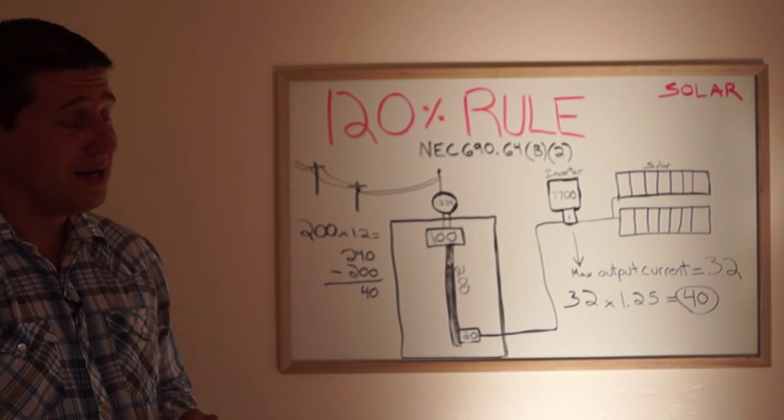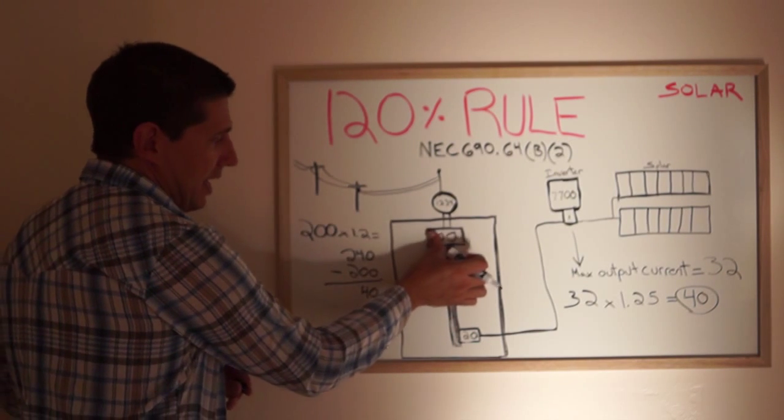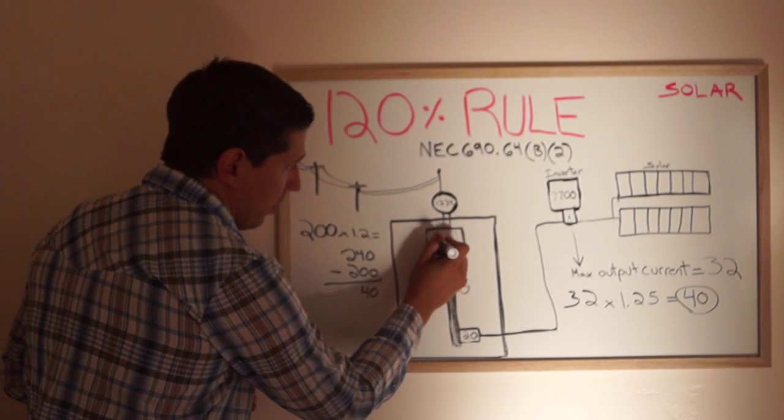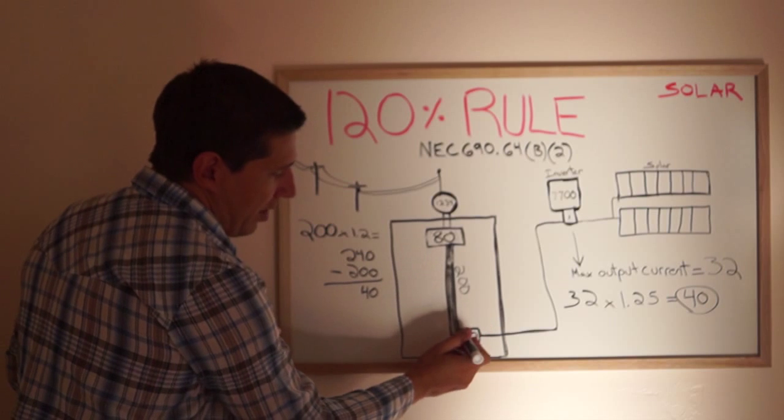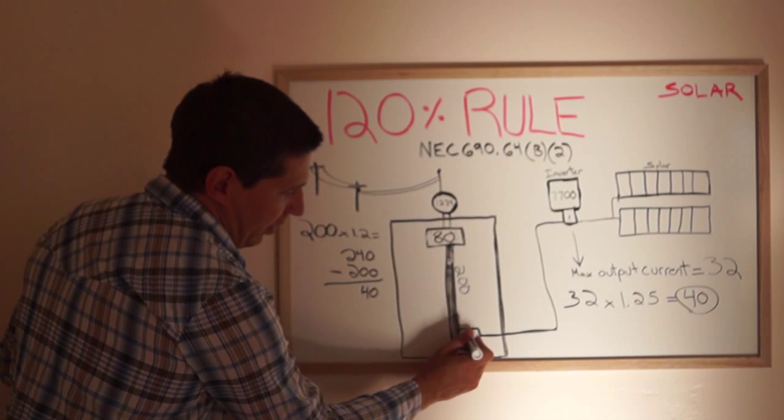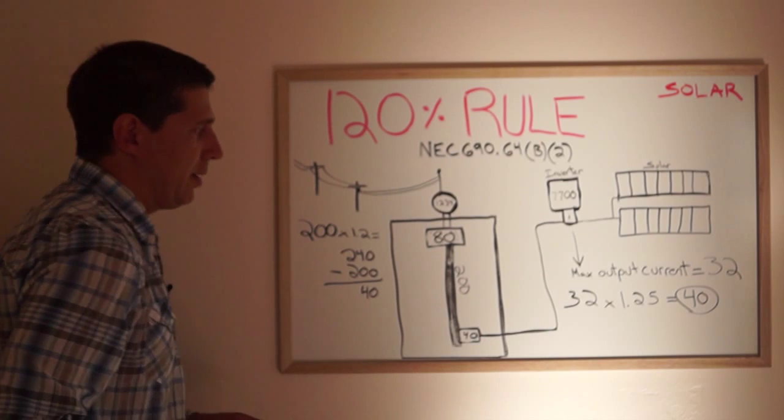Now you can derate as well here. We can derate this to 80 amps, assuming there's load calcs performed, which would allow you to install your 7700 watt inverter on a 100 amp panel.